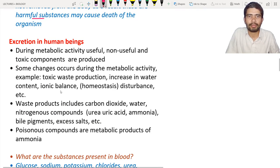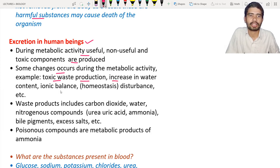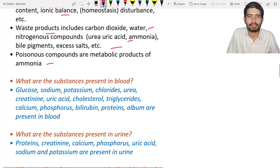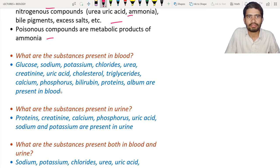Next is excretion in human beings. During metabolic activities, useful, non-useful, and toxic materials are produced — including toxic waste, increased water content, and ionic imbalance. Waste includes carbon dioxide, water, nitrogenous waste like urea, uric acid, ammonia, and bile pigments. Poisonous compounds like ammonia, coming from nitrogenous compounds, must be removed or normal body functioning will be disrupted.